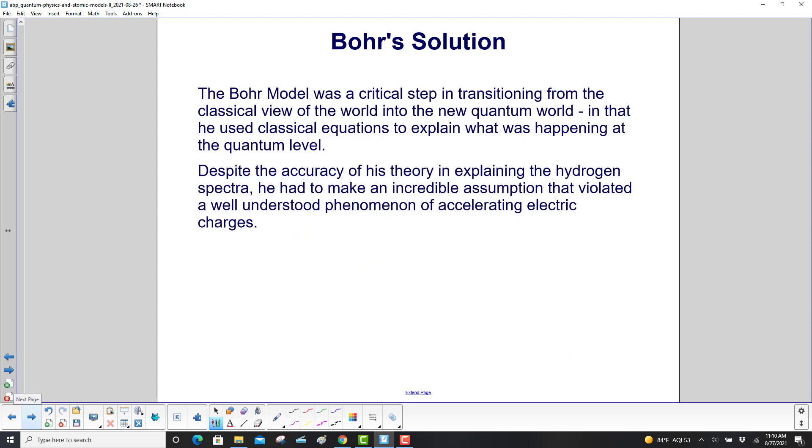The Bohr model was a critical step in transitioning from the classical view of the world into the new quantum world, in that he used classical equations to explain what was happening at the quantum level. Despite the accuracy of his theory in explaining the hydrogen spectra, he had to make an incredible assumption that violated a well-understood phenomenon of accelerating electric charges, in that they should be radiating energy, and Bohr's solution says, as long as they're in an approved orbit, they are not.